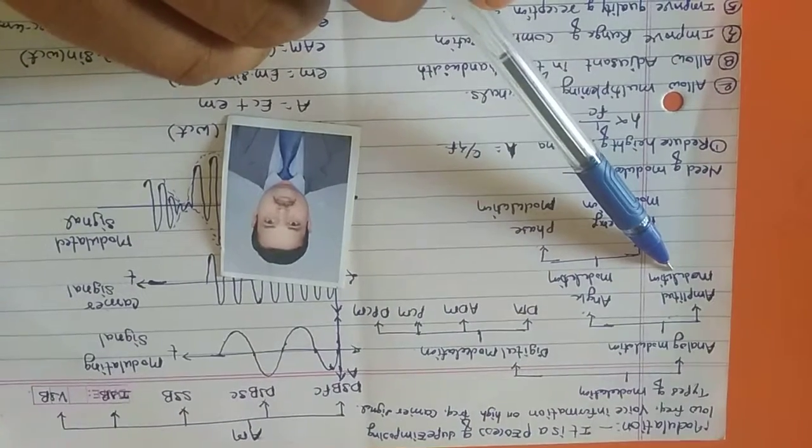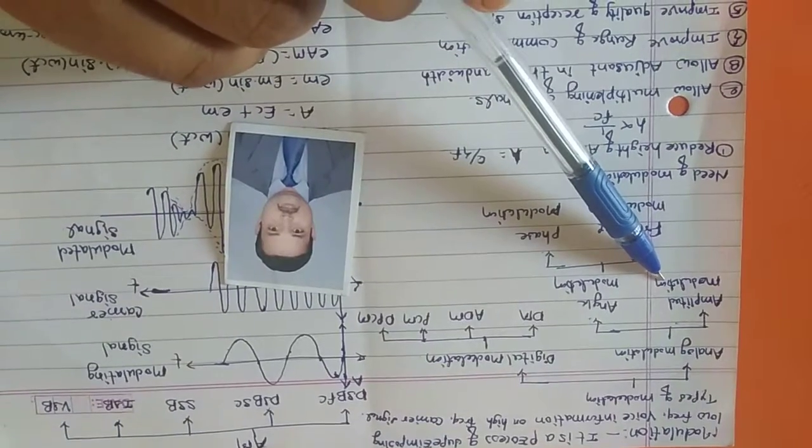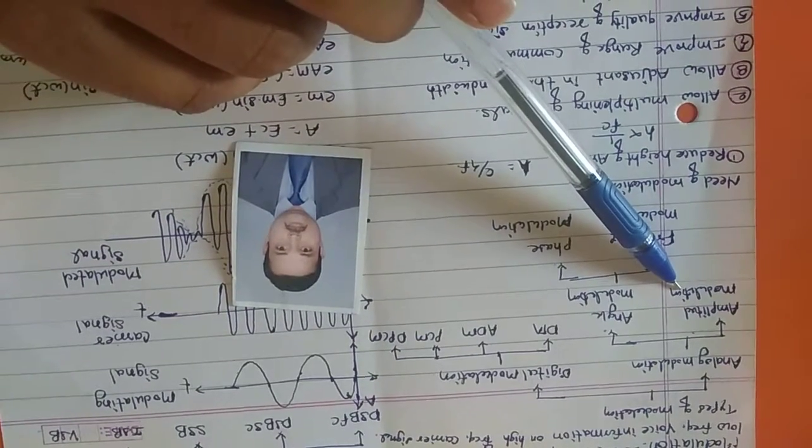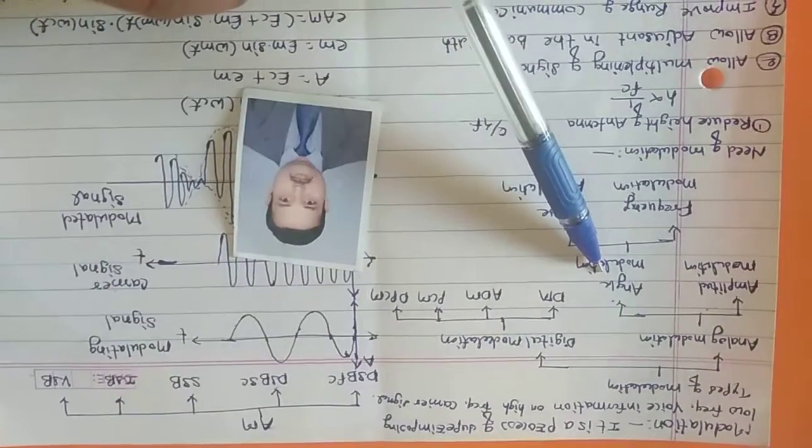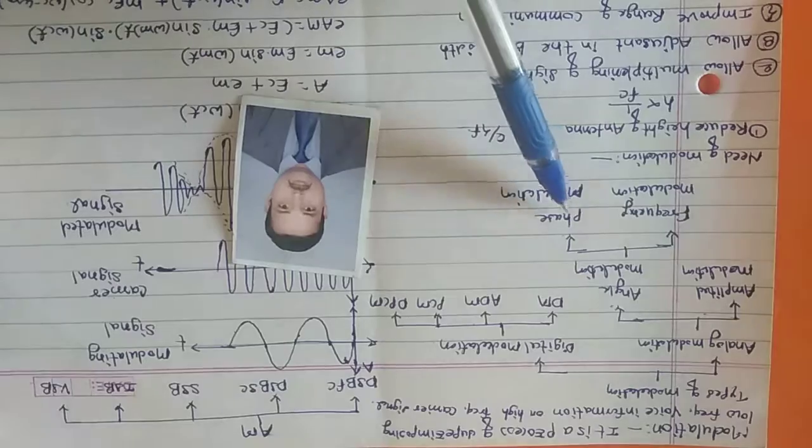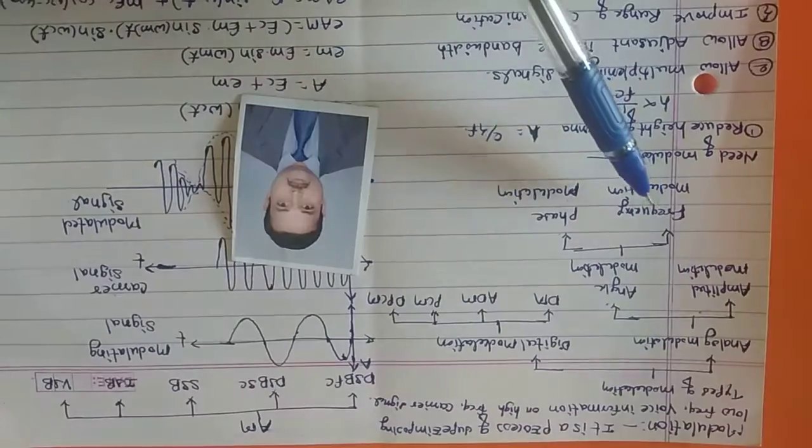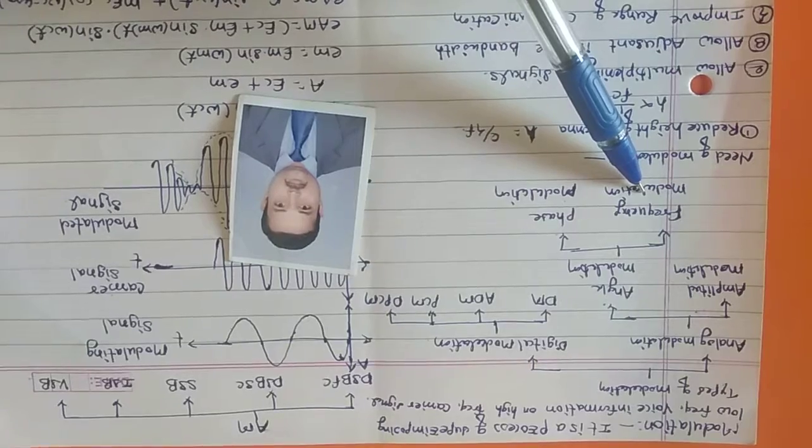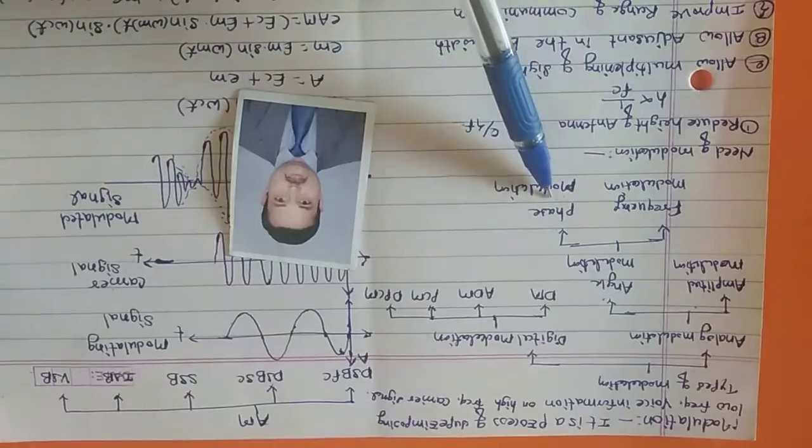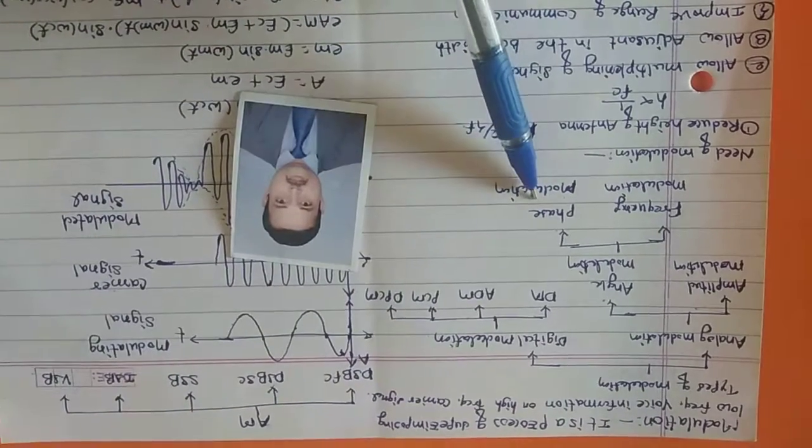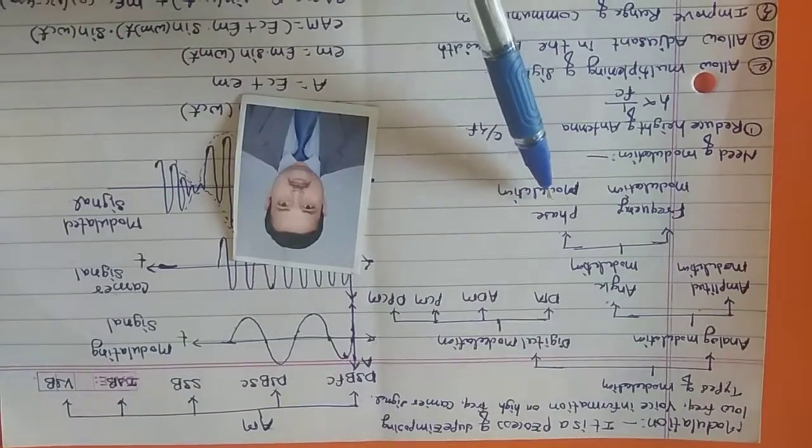In amplitude modulation, we are going to change the amplitude of the carrier with respect to the modulating signal, and frequency and phase remain constant. In frequency modulation, we are changing the frequency of the carrier with respect to the modulating signal, and amplitude and phase remain constant. In phase modulation, phase will be changed and amplitude and frequency will remain constant.